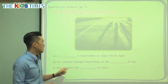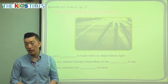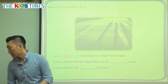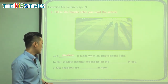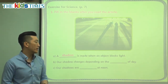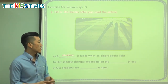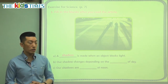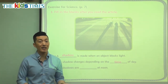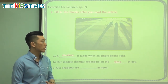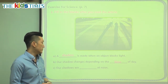It says a blank is made when an object blocks light — when I block the light, what is created? We talked about this: a shadow is created. Our second question says our shadow changes depending on the blank of day. What changes the length of our shadow? We said it depends on the time of day — it's the shortest in the middle of the day, and in the early and later parts of the day, our shadows are long.